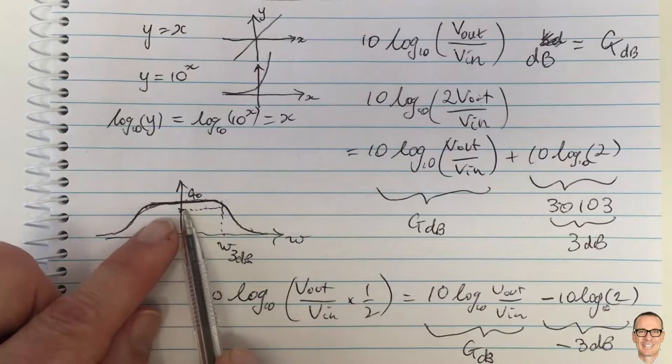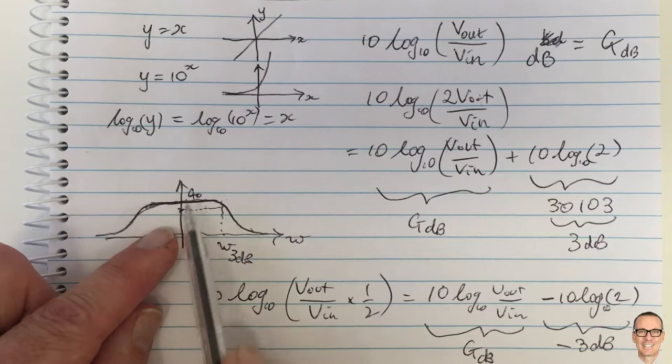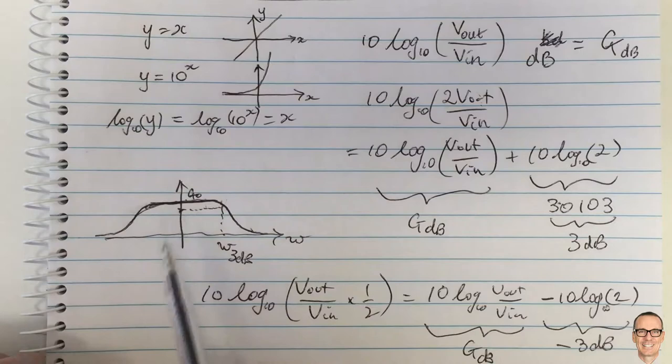It's often confusing because this is drawn here not at the halfway point and so people if they're thinking half the power you'd think halfway down but that's if you're thinking linear in the plot...